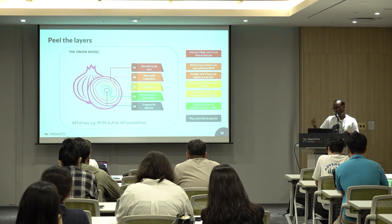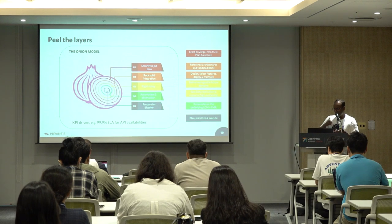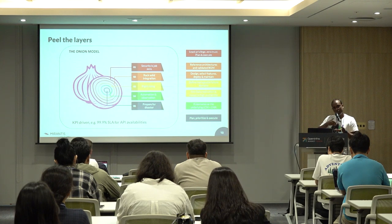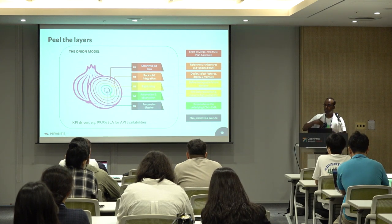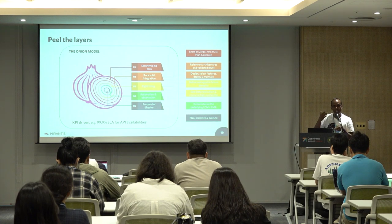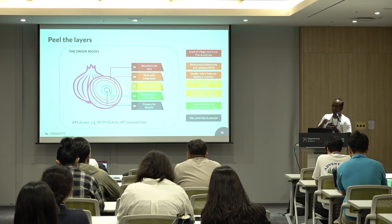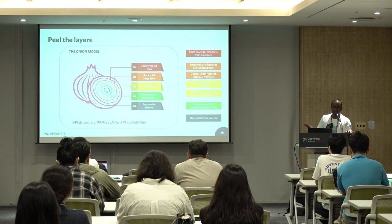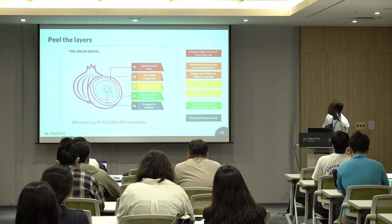When you deploy different OpenStack clusters on each data center, you have less dependency in terms of latency and bandwidth across sites — you can have long-distance data centers. But that means you need to manage at least three separate deployments. When you have one stretched cluster, you have more constraints in terms of latency and bandwidth, but you manage a single API endpoint. Both approaches have trade-offs.